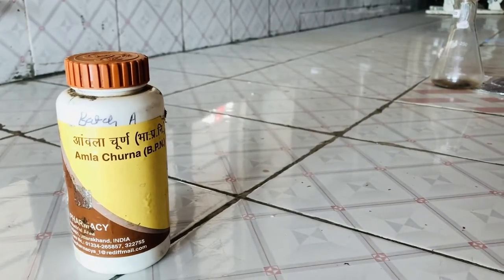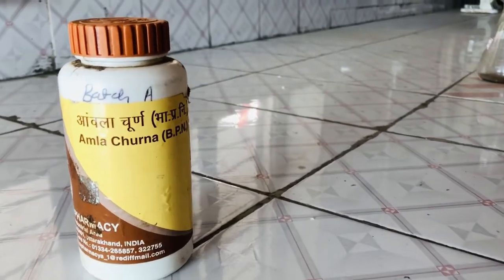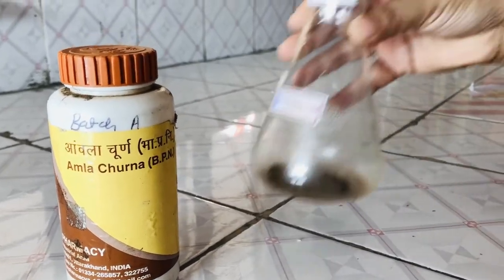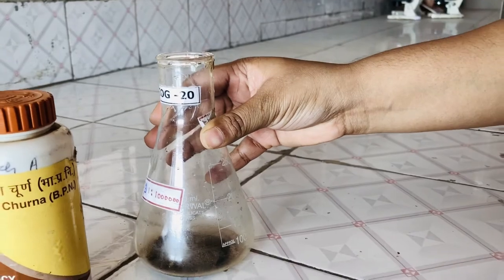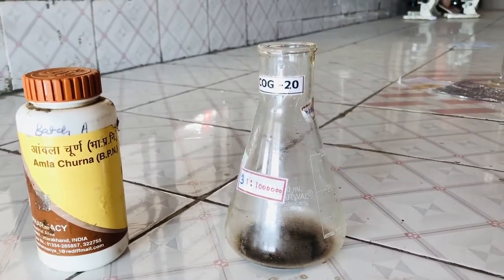We are going to start with the phytochemical screening test and we have chosen amla as a tannin. We have weighed out 5 grams of tannin, that is amla, and we are going to add to this 50 ml of distilled water.